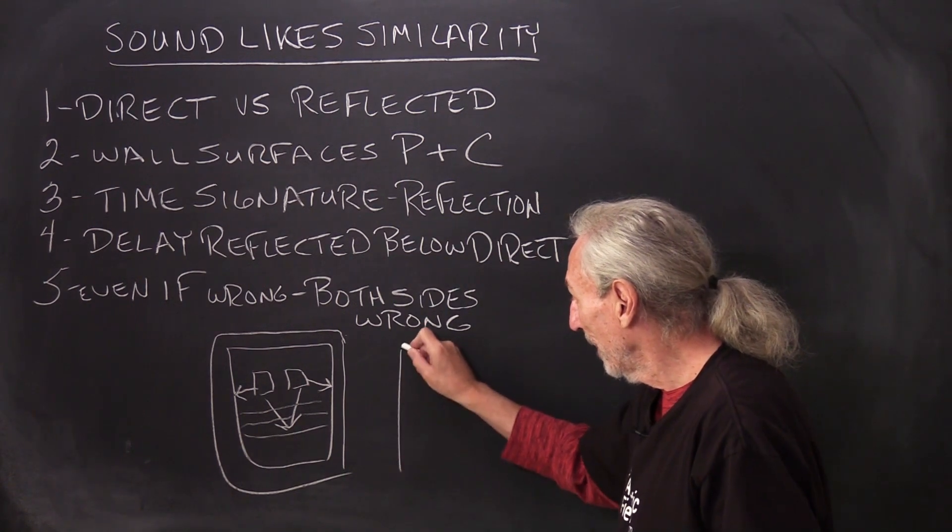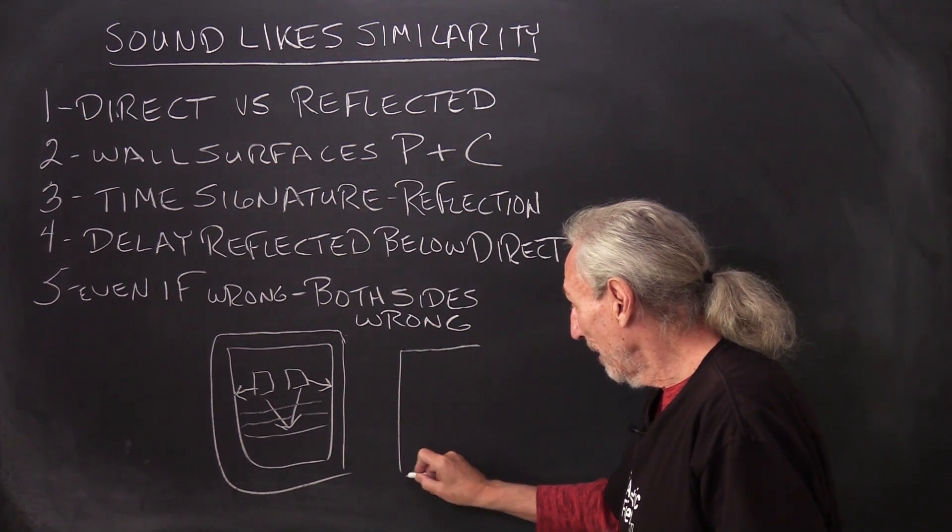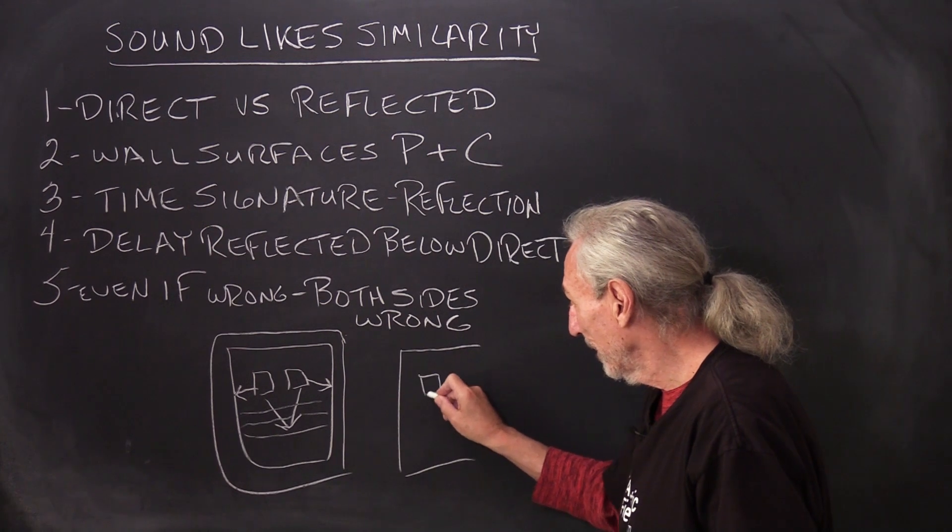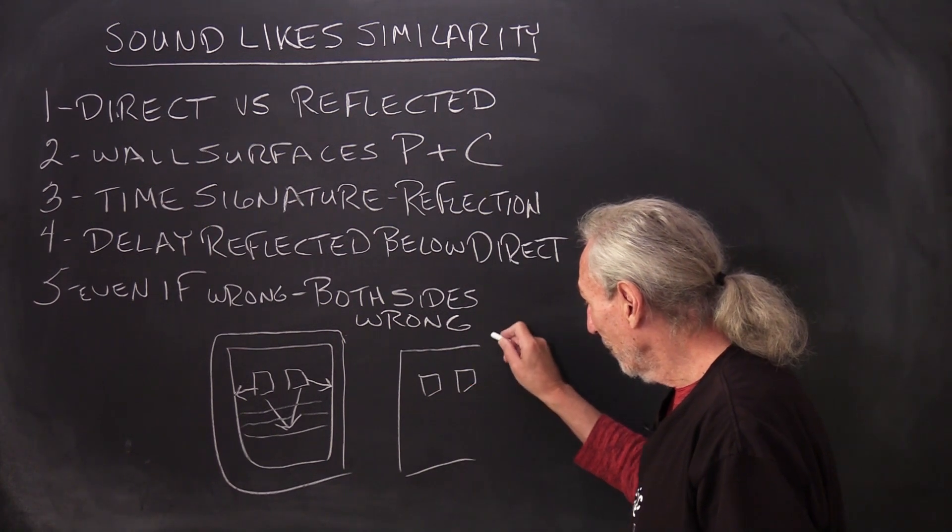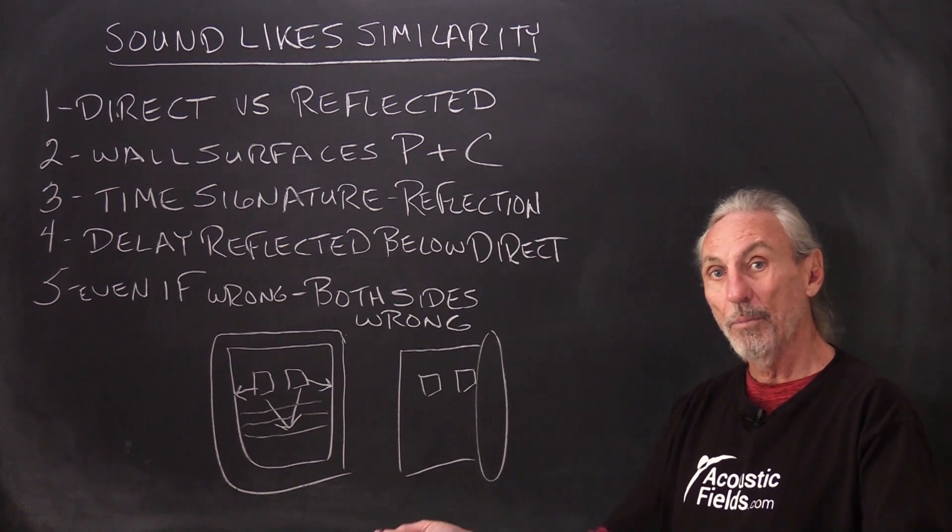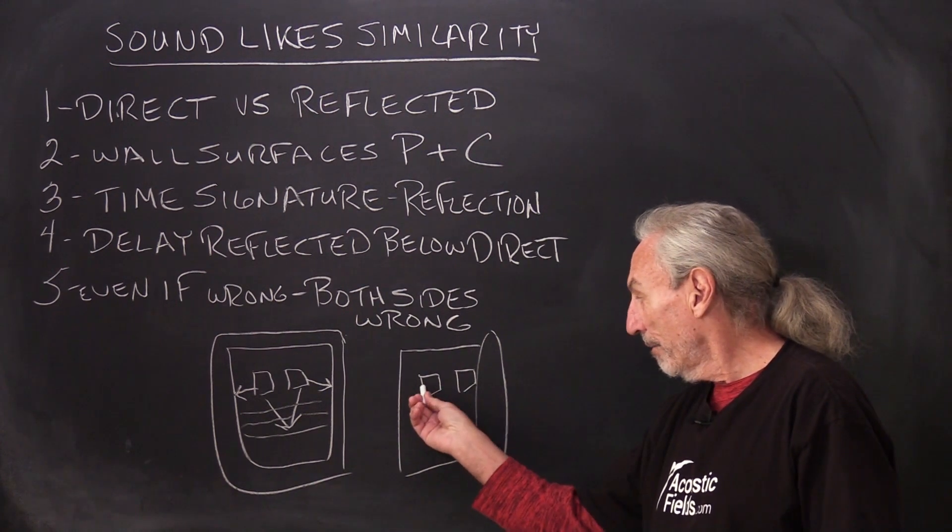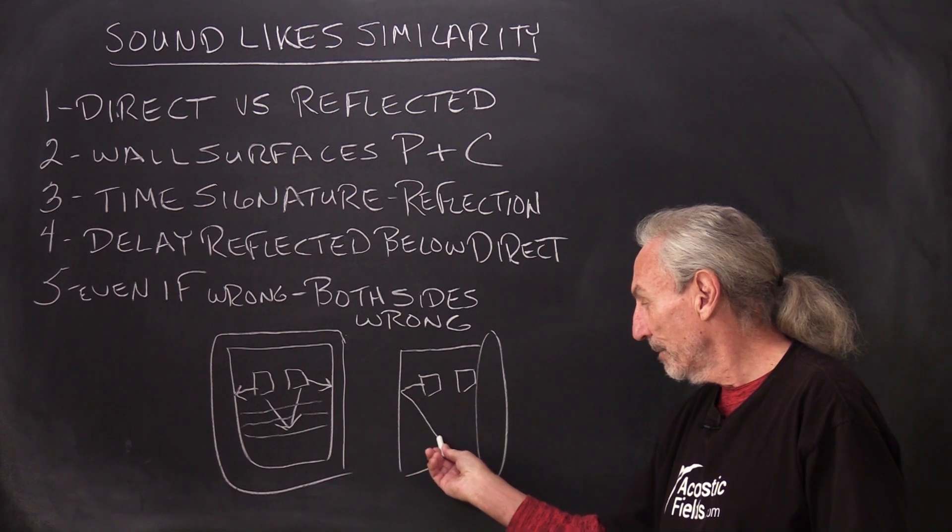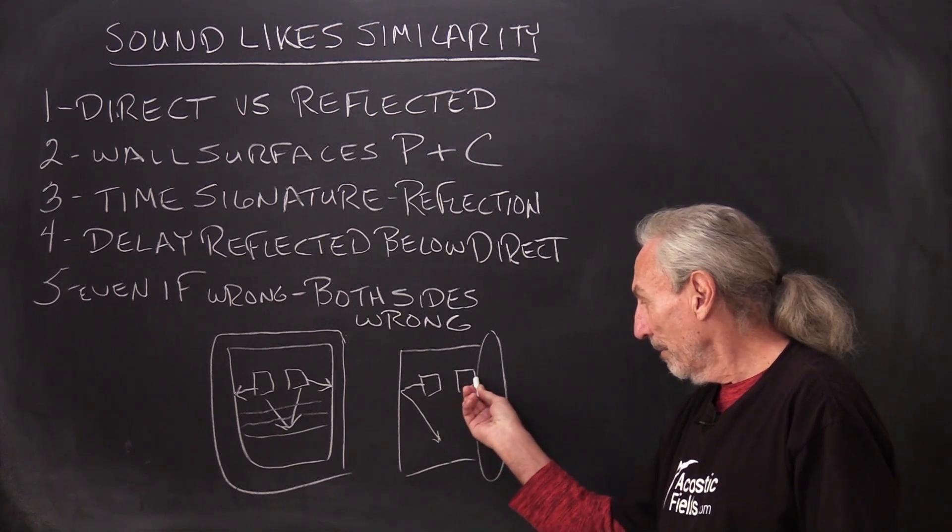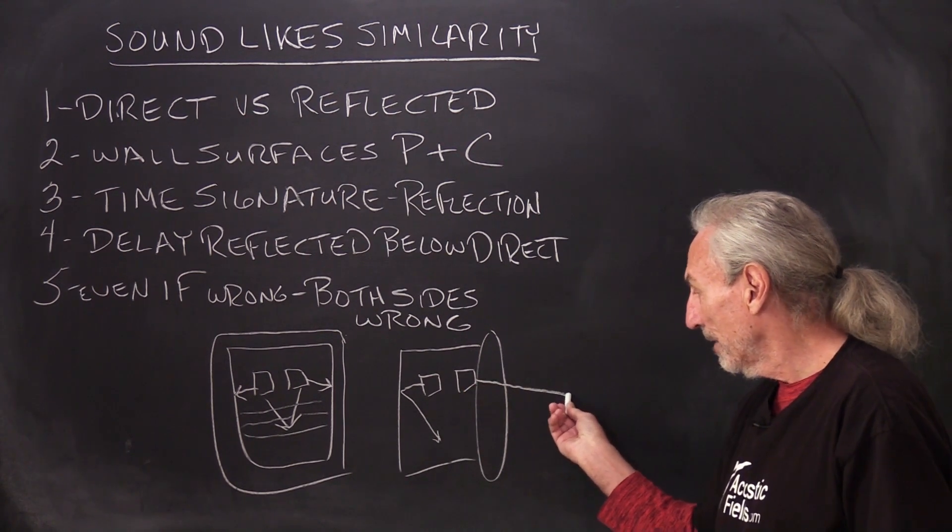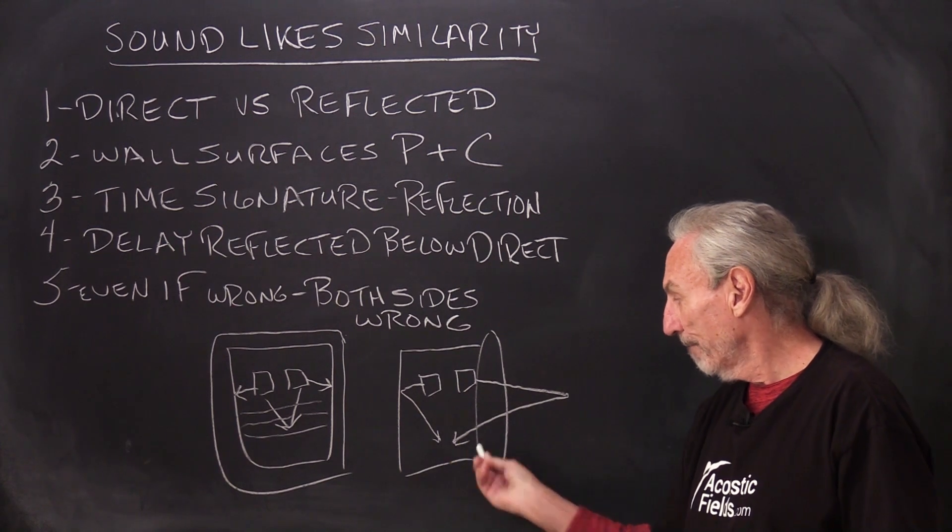I see a lot of rooms that are set up with their system like this and there's no right wall at all. It's an open plan. So we have a reflection that strikes this wall and comes back, but then we got something that goes way out here and comes back.